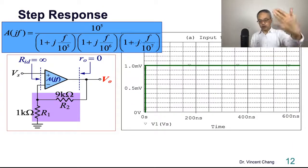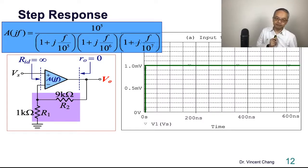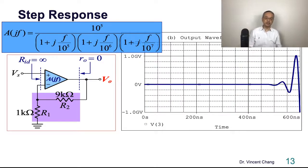Let's try the step response. Let's feed in the step input with a step size of 1 millivolt. Then what will happen? Because it's unstable. You will see what? You see growing oscillation. Let's see the result. You will see the growing oscillation. This is the growing oscillation. So I think these two simulations...